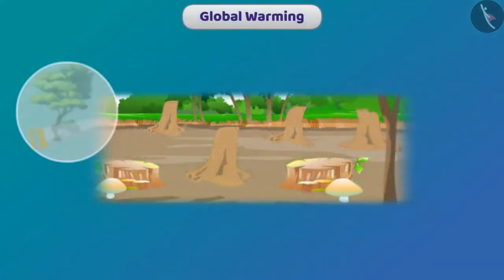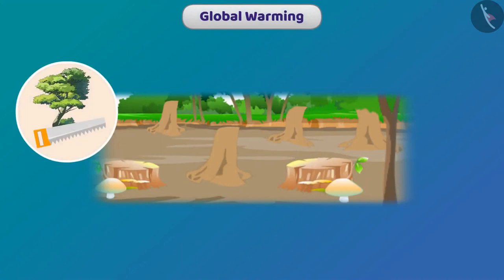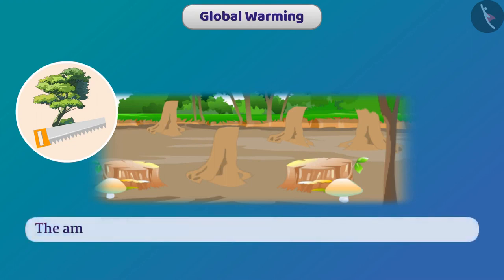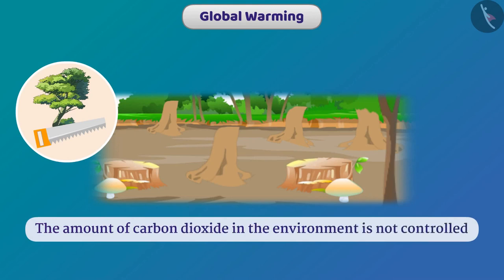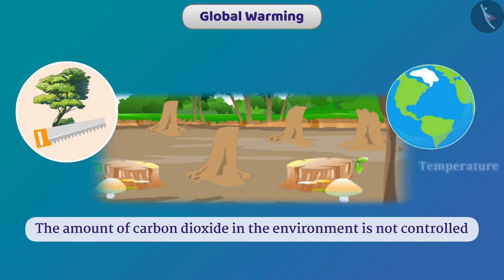Our activities are causing huge loss to forest resources. Due to deforestation, there are many problems — the amount of carbon dioxide in the environment is not controlled, due to which the temperature of the earth has started to rise. We call this problem global warming.